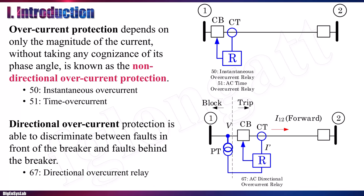In some cases, we can use the direction of the current to discriminate between fault and no-fault conditions — this is called directional overcurrent. In the ANSI IEEE standard used in America, number 50 is used for instantaneous overcurrent, 51 for time overcurrent, and 67 represents the directional overcurrent relay.